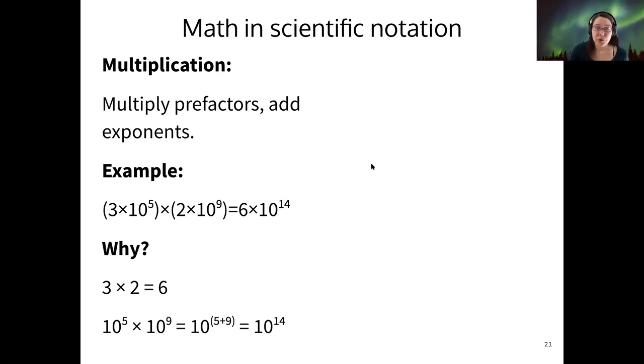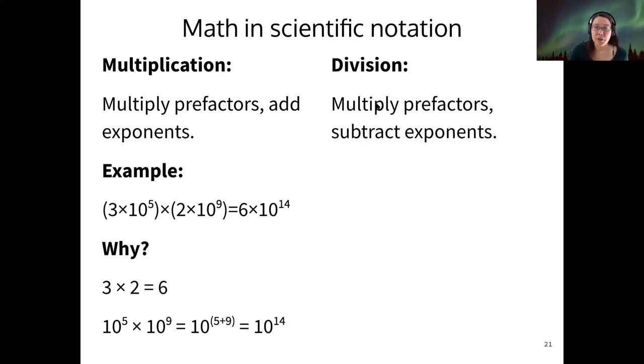Division follows a similar rule, except now you divide those pre-factors and now you subtract the exponents. So I'll give you an example. If we have 9 times 10 to the 6 divided by 2 times 10 to the 3, we get 4.5 times 10 to the 3.